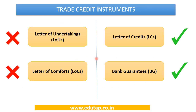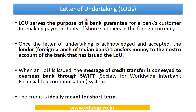We have discussed the different trade credit instruments — letter of undertakings and letter of comforts whose use has been discontinued, and letter of credits and bank guarantees which will now be used for trade credits. Let us now understand the different features of all these instruments to obtain greater clarity on why this move by RBI took place and how examination questions can be framed on this topic.